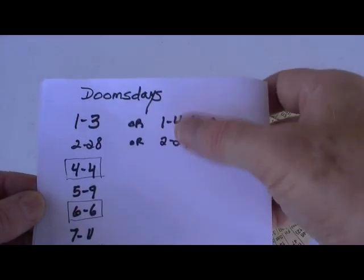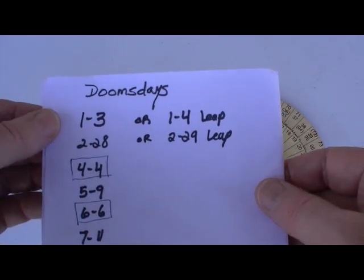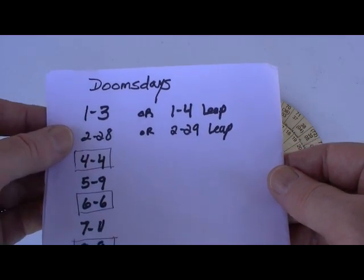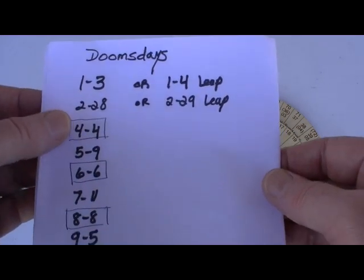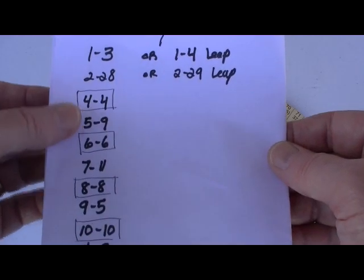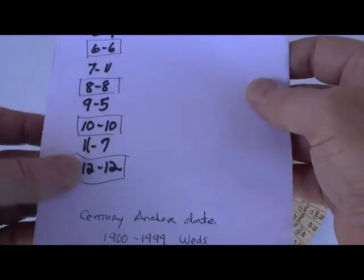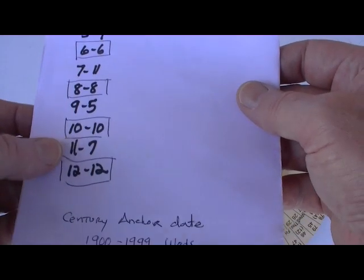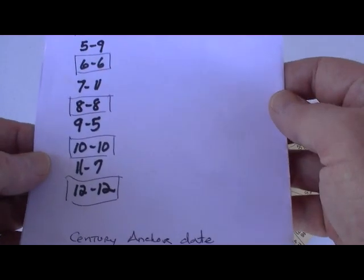For example, in non-leap years, January 3rd, last day of February, February 28th, as well as 4-4, 6-6, 8-8, 10-10, 12-12, which are easy to remember, and also 5-9, 7-11, 9-5, and 11-7, which are also pretty easy to remember.